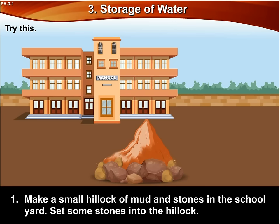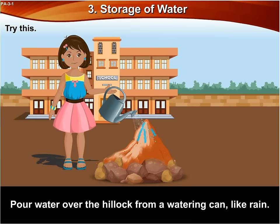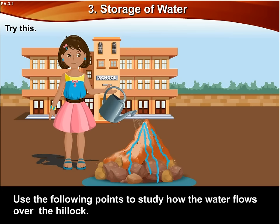Make a small hillock of mud and stones in the school yard. Set some stones into the hillock. Pour water over the hillock from a watering can like rain. Use the following points to study how the water flows over the hillock.